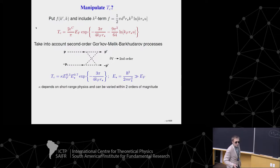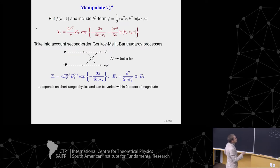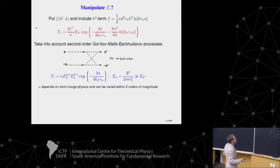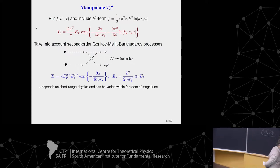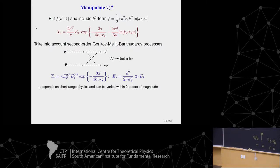Substituting f(k,k') and including this term, I get the transition temperature in improved form. But it is not sufficient: in order to obtain a numerical coefficient in front of the exponent, one should take into account the so-called Gorkov-Melik-Barkhudarov corrections. These are corrections due to the polarization of the medium by particles. Particles collide, they re-scatter, and scatter once more, and you get all these diagrams. This δV is second-order. Then you obtain that T_c is this exponential quantity, multiplied by E_Fermi^0.3, a numerical coefficient κ, and the characteristic molecular energy, which is much larger than the Fermi energy. This κ can be varied within two orders of magnitude.